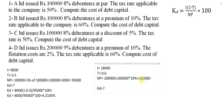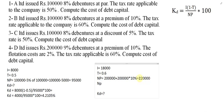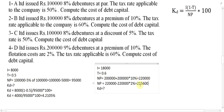NP is equal to 2 lakh 20,000 minus 2 lakh 20,000 into 2 percentage. If you press the equal sign you get the value equal to 2 lakh 15,600. So this is the value of NP for example number four.